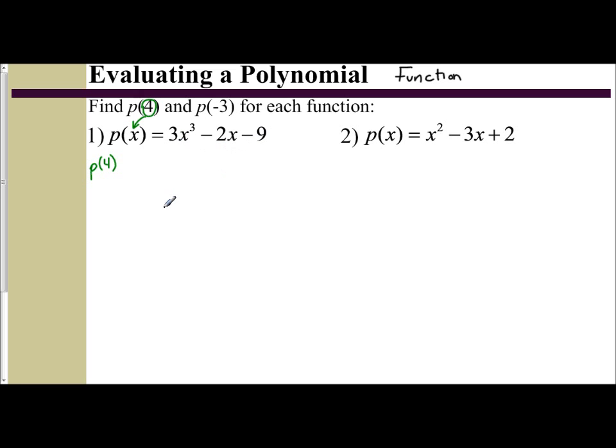And then perform out of order of operations to evaluate it. So you have 3 times, instead of x³, I'm going to put 4³, minus 2 times x. Instead of x, I'm going to put 4, so minus 2 times 4 minus 9.